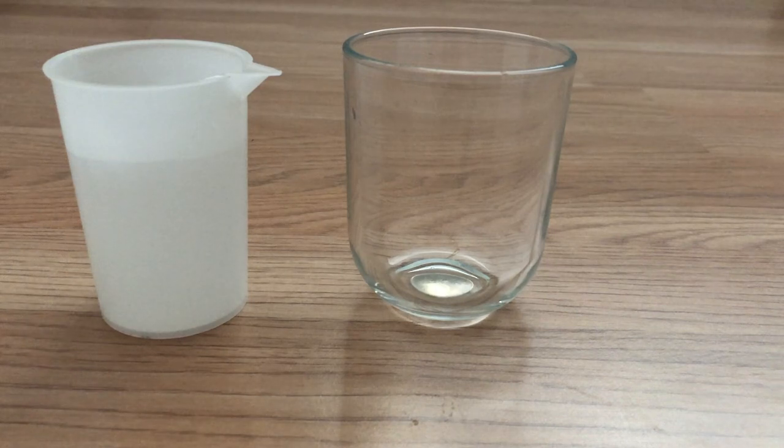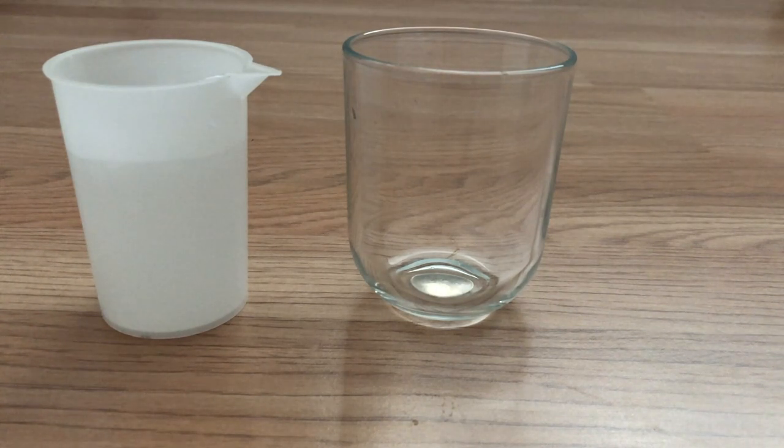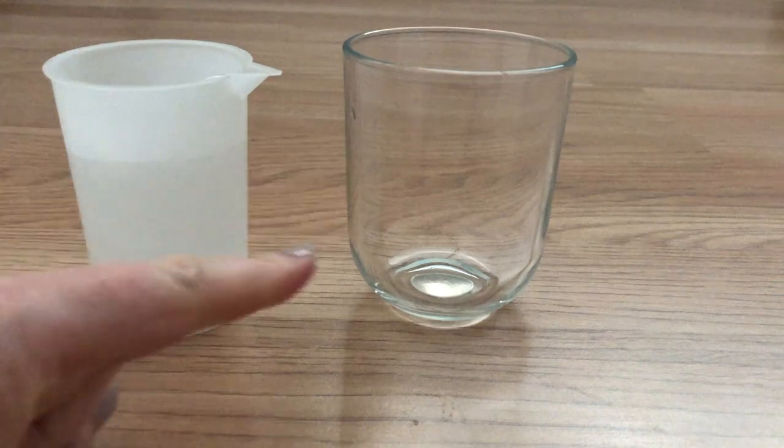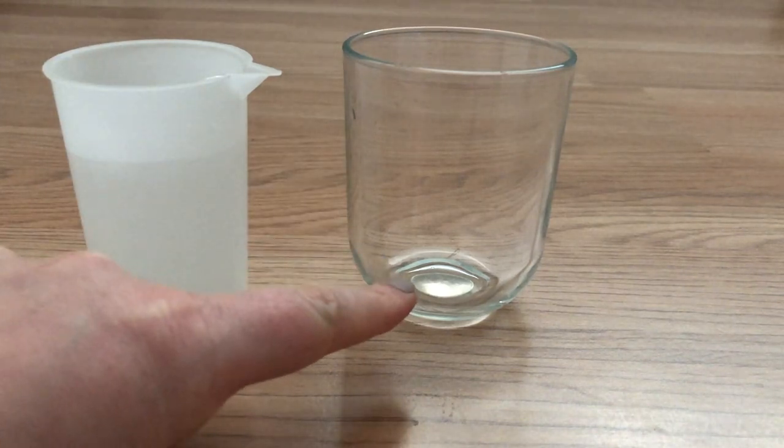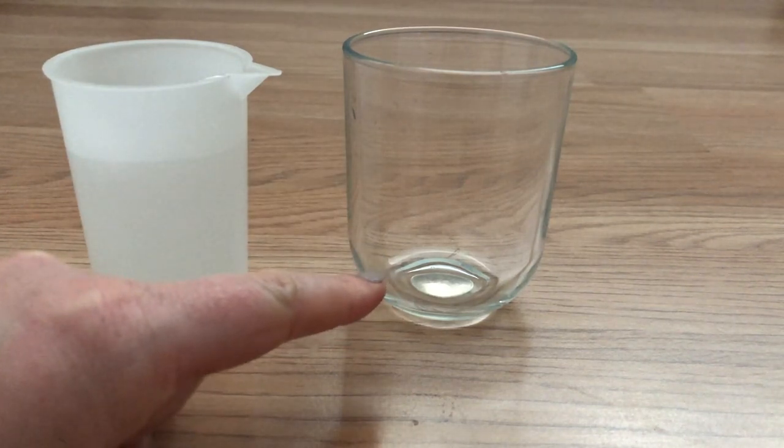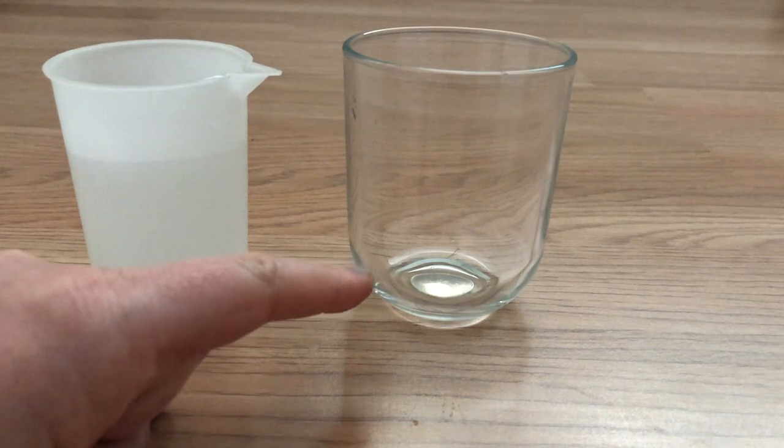Well, we see things because light travels in straight lines and it bounces off objects into our eyes. So at the moment, the light is bouncing off the coin and into our eyes, and that's why we can see the coin in the bottom of the glass.